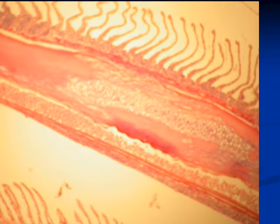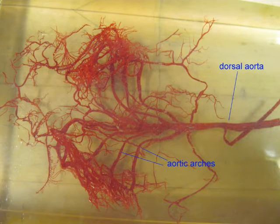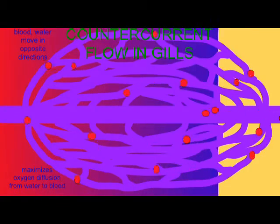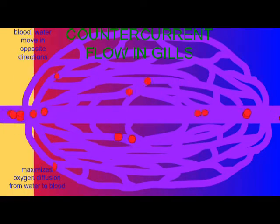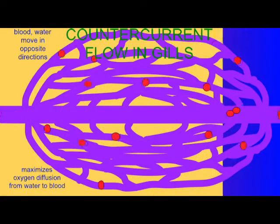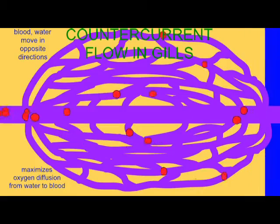In the lamellae, capillaries are located as water passes over the structures. As water does so, there is a counter-current exchange so that water is moving in one direction while the blood is moving the other.